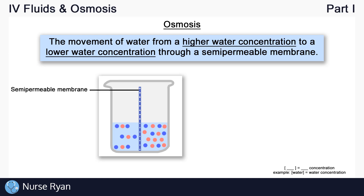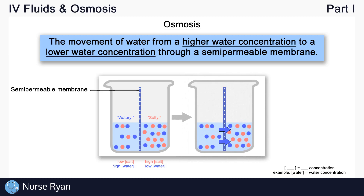Remember that water moves from a high water concentration to a low water concentration. The left side has a low salt concentration — we just put a little bit of salt in — and the right side has a very high salt concentration. It's very salty. Osmosis always cares about the water concentration, and the left side has a higher water concentration — the opposite of the salt. The right side is very salty, and the left side is very watery. So osmosis tells us that water will move from the higher water concentration on the left into the lower water concentration on the right, until the concentration of water becomes equal on both sides. Overall we end up with less total water on the left and more total water on the right, but the concentrations are now equal — and that is osmosis.